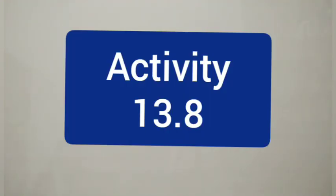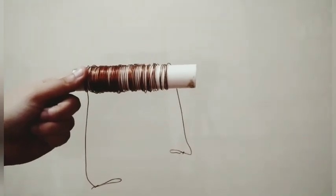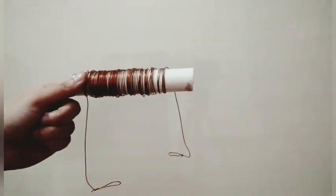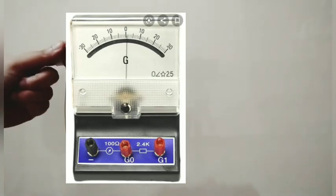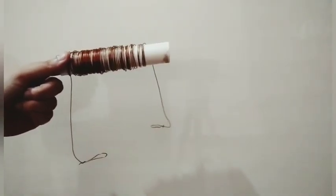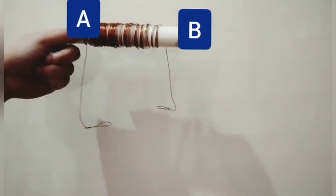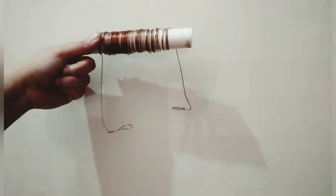We can explain by activity 13.8. For this, we require a conductor just like a solenoid in which a number of turns and coils are there. Then we require a bar magnet and a galvanometer. First step, take a coil of wire AB having a large number of turns. Connect the end of the coil to a galvanometer.